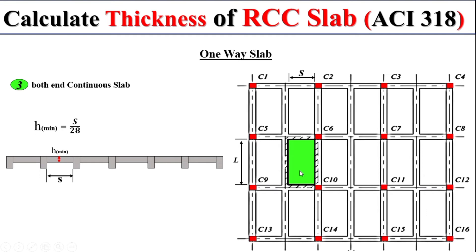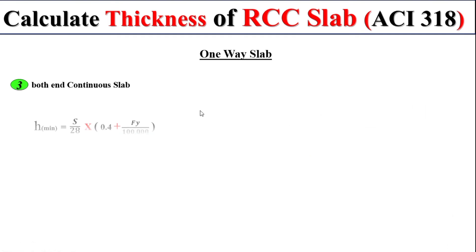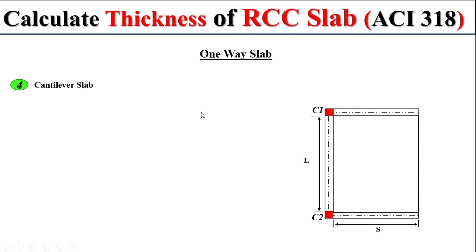Remember for this slab thickness calculation, we have a formula: S divided by 28 and multiply by this term. Now come to the fourth one. If we have a one-way cantilever slab and we are interested to find the thickness of the slab, we have formula S divided by 10 multiply by this term.